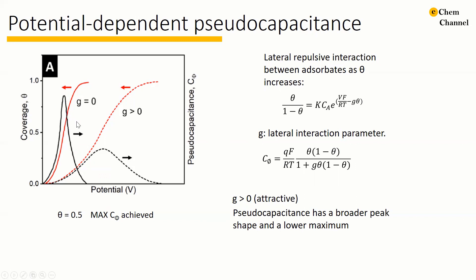However, this model does not take the interactions between the adsorbed species into consideration. So a parameter g is defined as the lateral interaction parameter. When g is larger than 0, it means attractive interaction between the A species; when g is smaller than 0, it means repulsive. The formula for pseudocapacitance is then modified. When g is larger than 0, still at theta equal to 0.5 it reaches maximum; however, the resultant pseudocapacitance has a broader peak shape and a lower maximum compared to the Langmuir case.